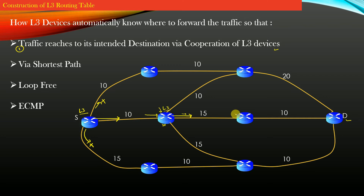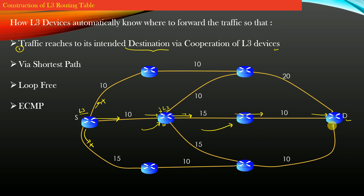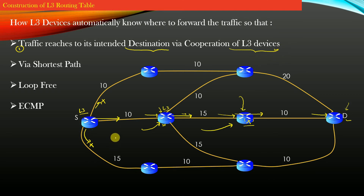Similarly, when the traffic reaches each subsequent router, it forwards the traffic as per its layer 3 routing table entry, and finally the traffic reaches destination router D. This means the traffic reaches its intended destination via cooperation of L3 devices. If even one router doesn't know how to forward the traffic, it will black-hole or block the traffic, so the traffic would not reach its intended destination.